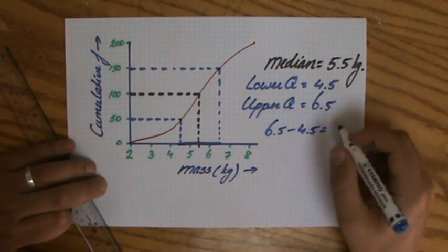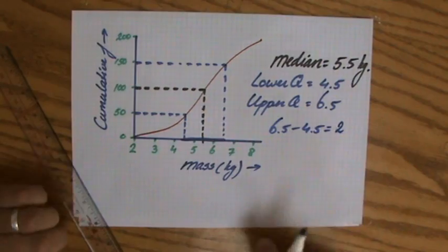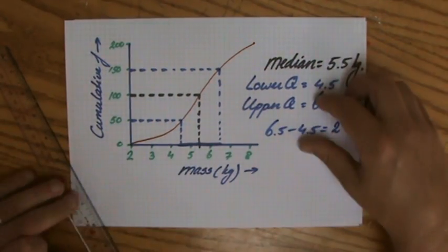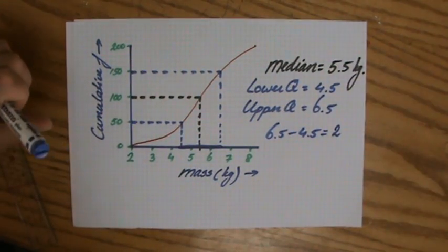The interquartile range - how much is that guys? Is 2. Fantastic. All right, now I expected those questions. You will get them. So it's not a surprise, it's really nice if they give it to you.